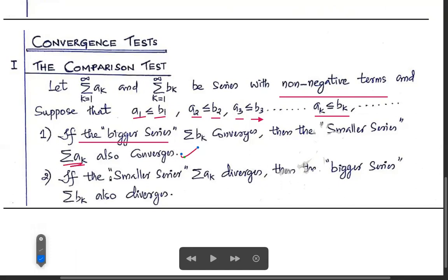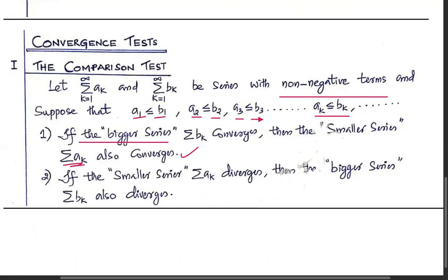And conversely, if the smaller series summation a_k diverges, then the bigger series also diverges.